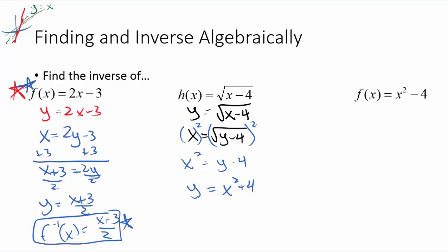So I'm going to write the y over on this side, we would have x squared plus four. And then finally I'm just going to write this in function notation. Since this is an inverse function, the inverse of h of x is equal to x squared plus four.